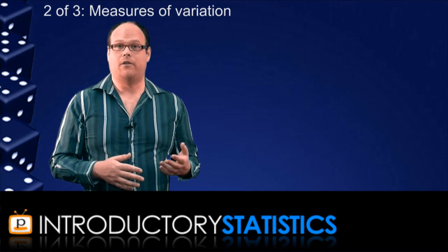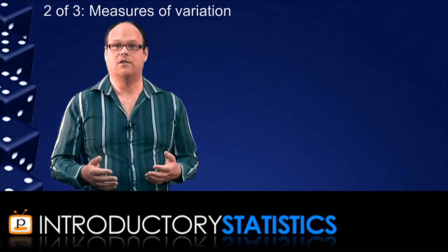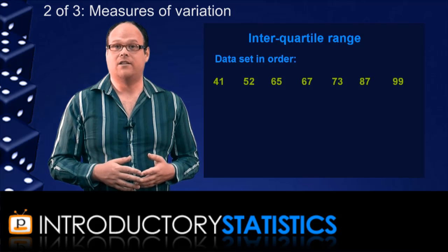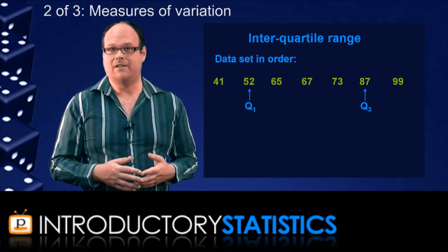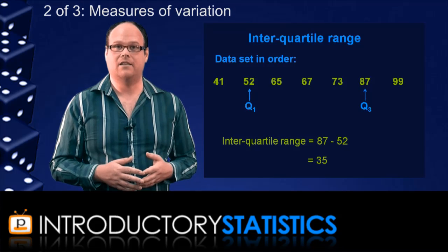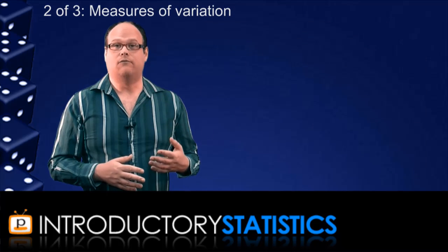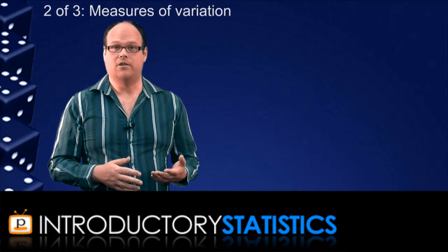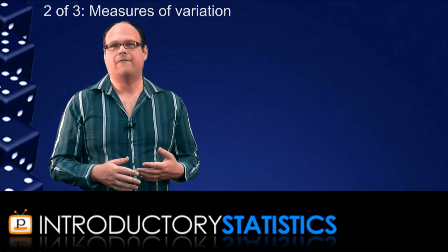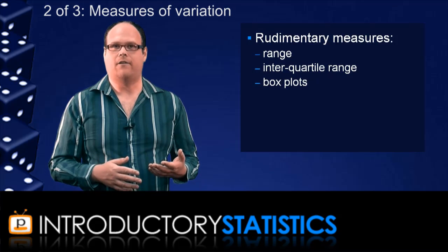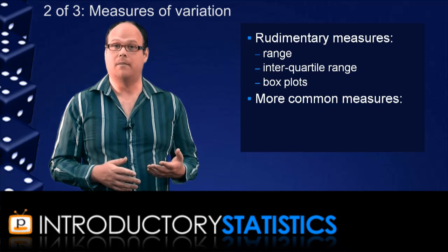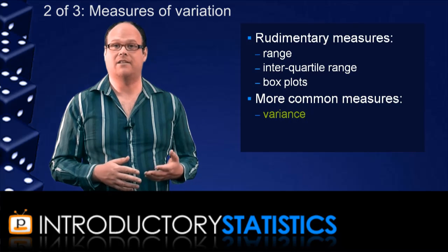The difference between the third quartile and the first quartile is known as the interquartile range. For the seven test scores, this interquartile range is the difference between 87 and 52, which is 35 in this case. So now we've looked at ranges and interquartile ranges and box plots. They all provide a fairly rudimentary measure of variation in data.